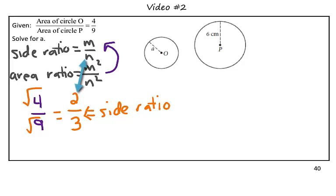What we can do now is set up a proportion to solve for our missing radius, A. To set up our proportion, we're going to use the side ratio that we found, which is 2 over 3, and set it equal to the radii.